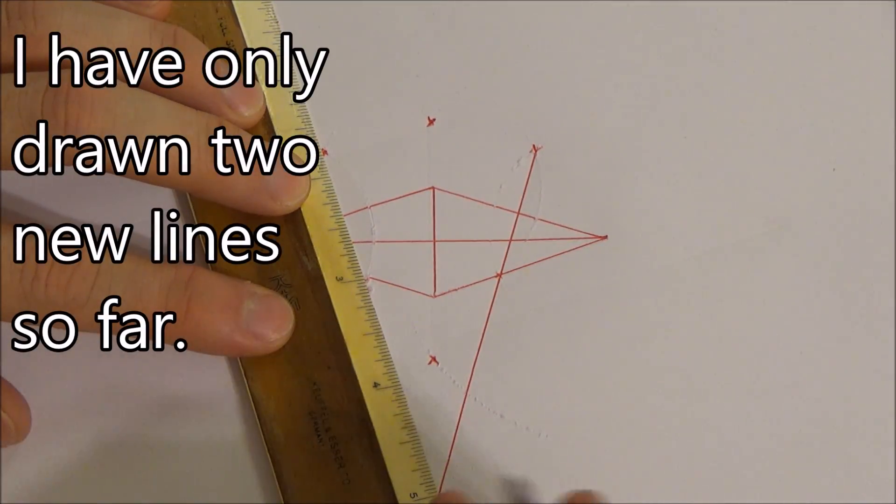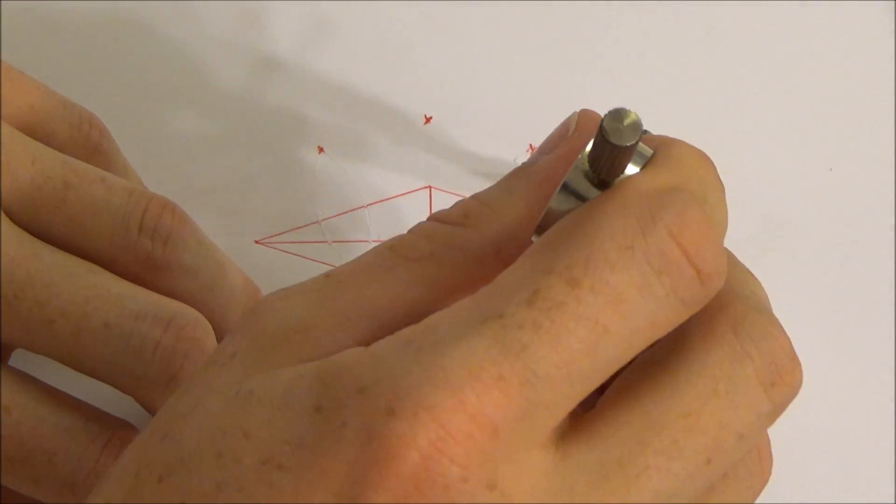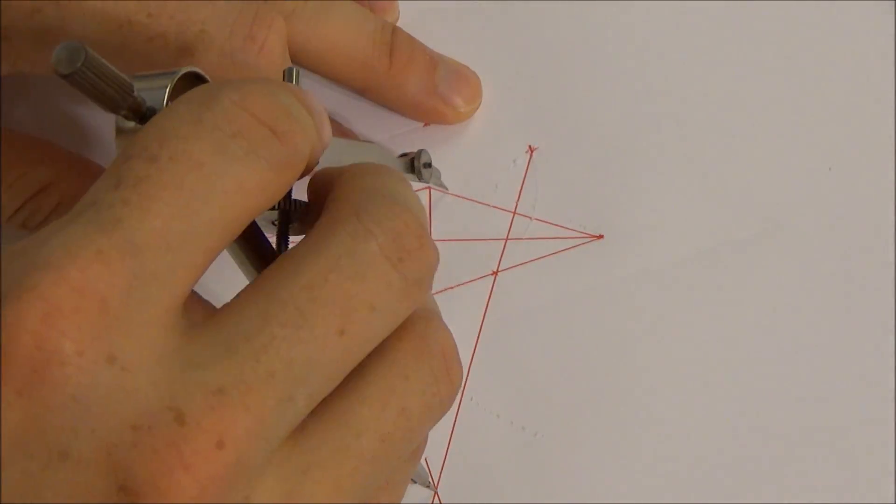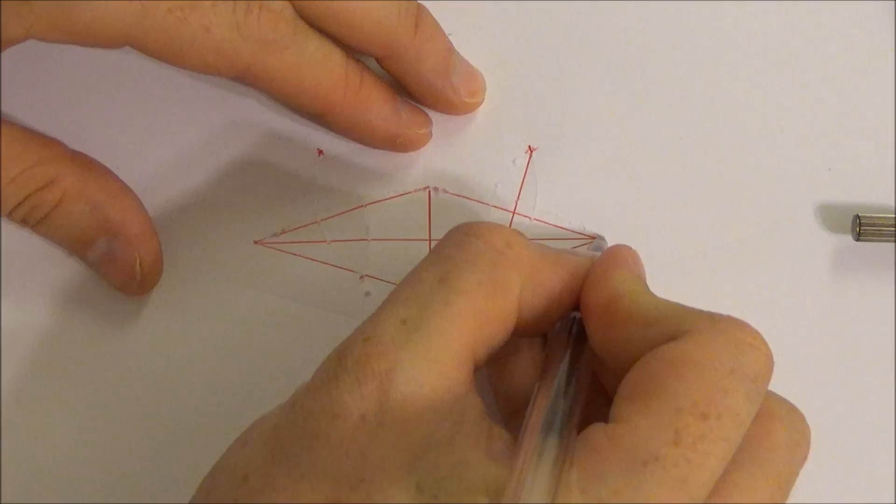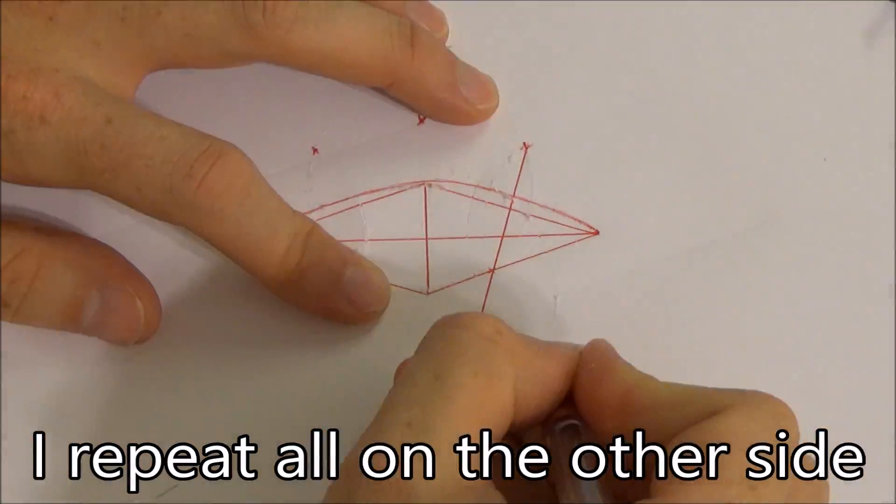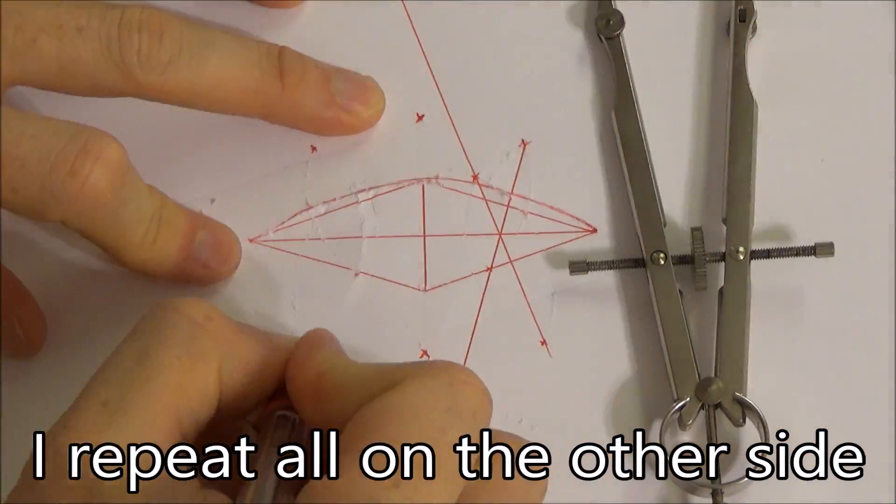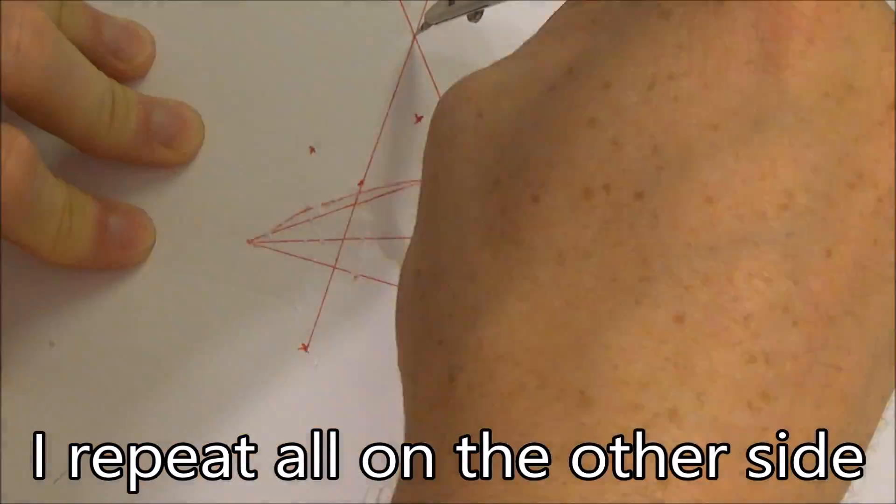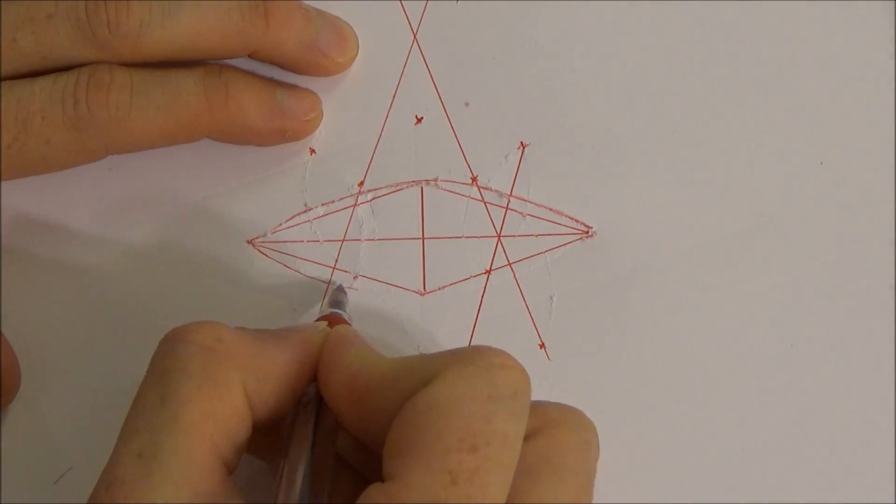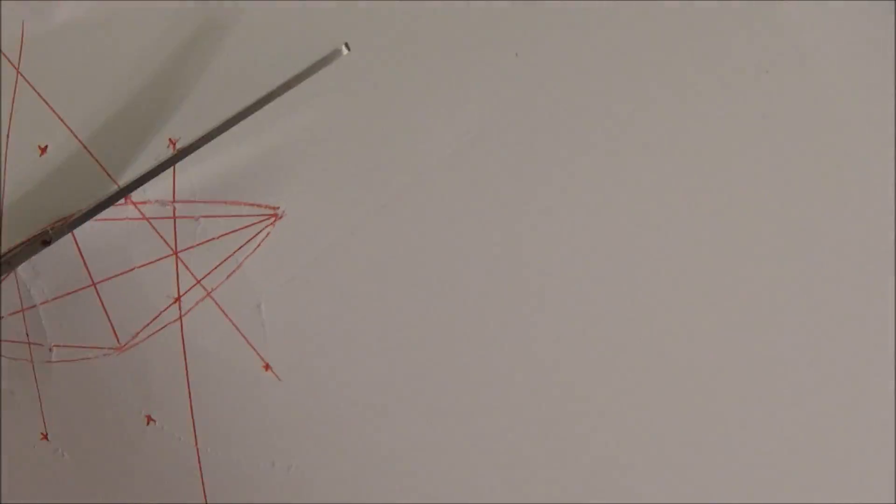The two intersection points of the newest four lines mark the center of the arcs that make up the beach ball panel. Using the compass, I then score the circular arc through the two sets of three points. For clarity, on camera, I then trace the arcs I scored with the compass. Now that the panel shape is finalized, I can cut it out.